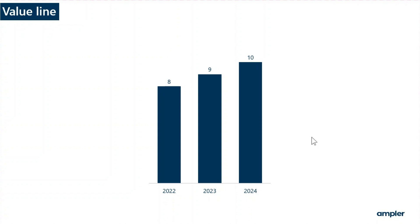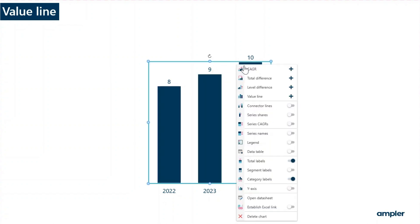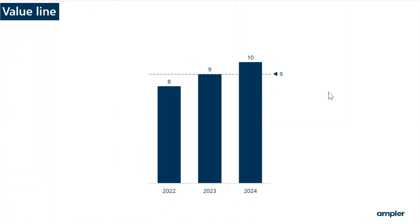A value line helps visualize a value across categories. To insert a value line, right click on the chart and select value line from the context menu. By default, the line is inserted at the average of the category totals.